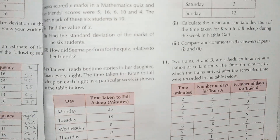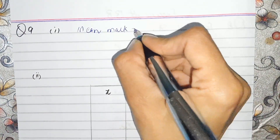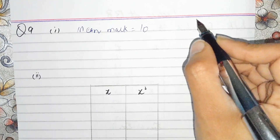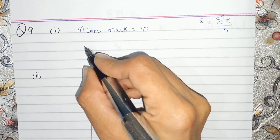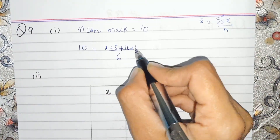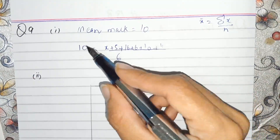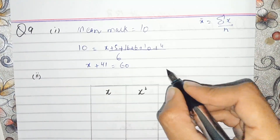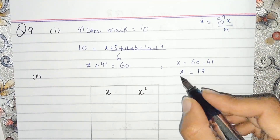For part 1, we use the mean formula: sum of values over total number of values. The mean is 10 and there are 6 students. So: (X + 15 + 16 + 6 + 10 + 4) / 6 = 10. That gives X + 41 = 60, so X = 60 − 41 = 19. Sima's marks are 19.